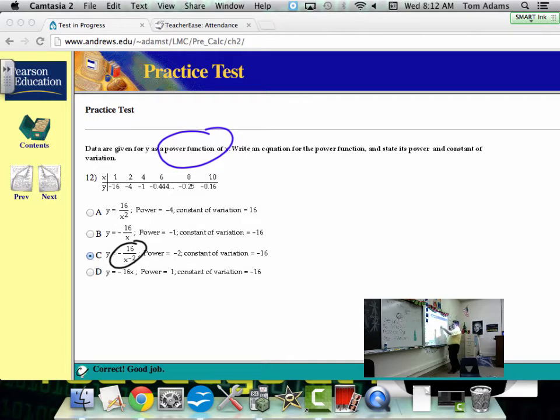So, it says you're given y as a power function, write the equation of the power function and state its power and its constant of variation.